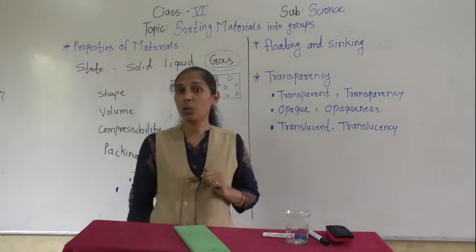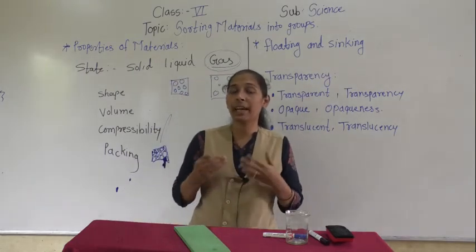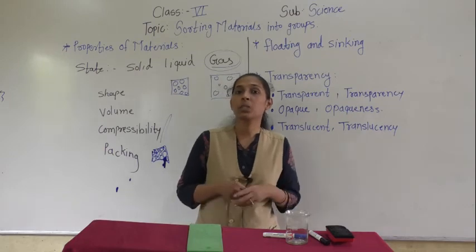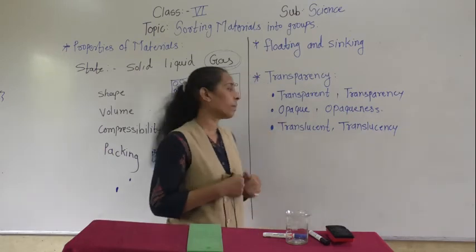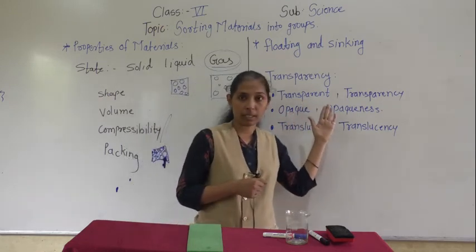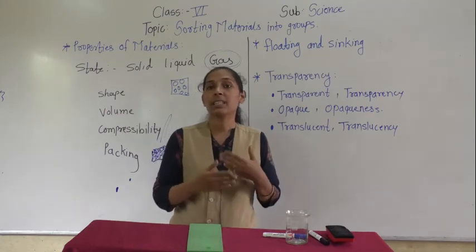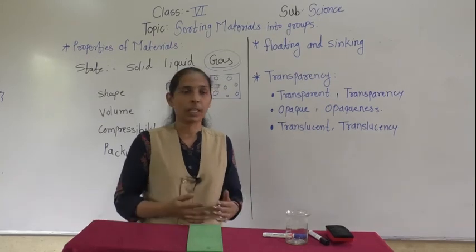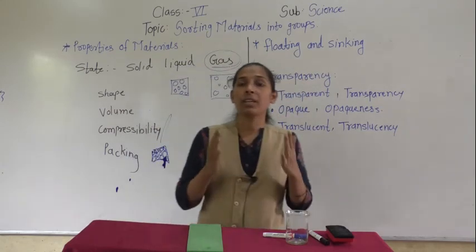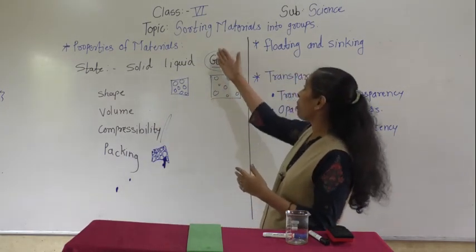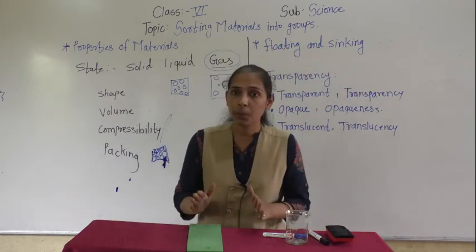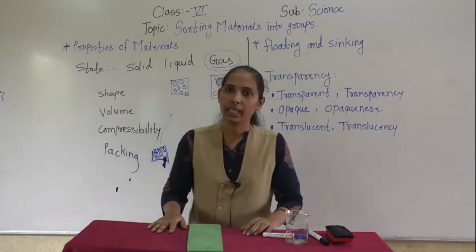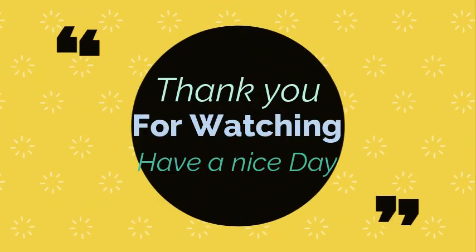Now you can understand why shopkeepers keep different food items in glass jars — it helps customers see the objects clearly. That is why shopkeepers use jars made of transparent material like glass, and also some transparent plastic bottles. These are the three types of transparency. With this, we have completed our lesson — sorting materials into groups. Thank you, and we will meet in the next video.